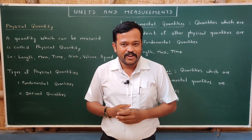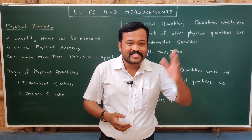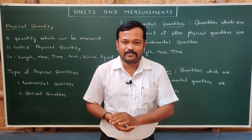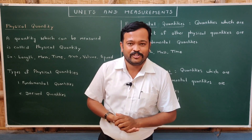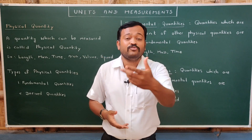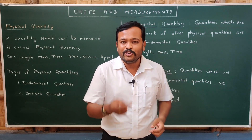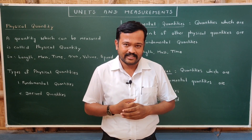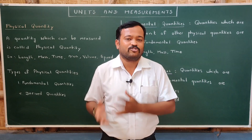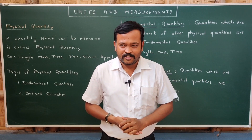Let us take some examples. When you get up early in the morning, you look at the clock — it's seven o'clock. So you measure time. Time is a quantity which can be measured, so time is a physical quantity. When you come out of your bedroom, you see a milkman and ask him for two liters of milk. You measure the volume of the milk, so volume is a physical quantity.